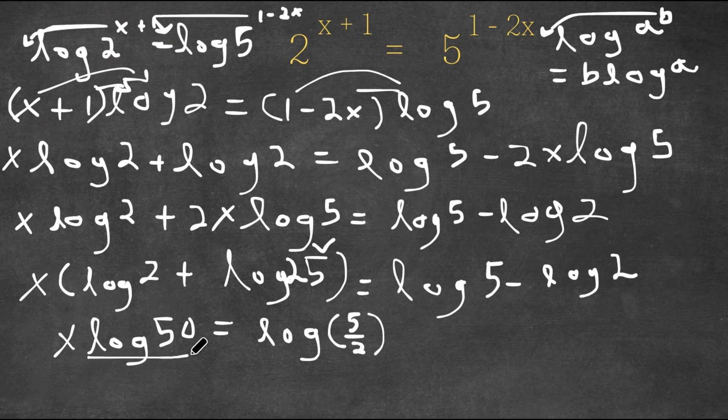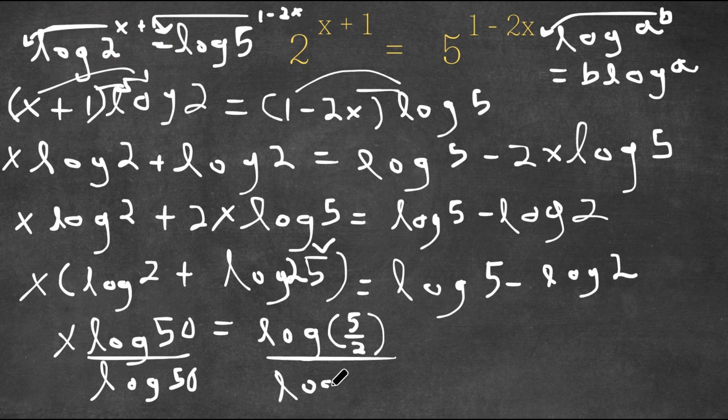So now if I divide both sides by log 50, because we want to isolate x, I get x is equal to log 5 over 2 over log 50, which is the same thing as log base 50 of 5 over 2.